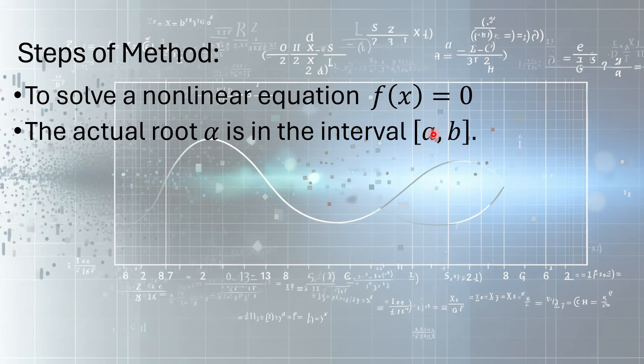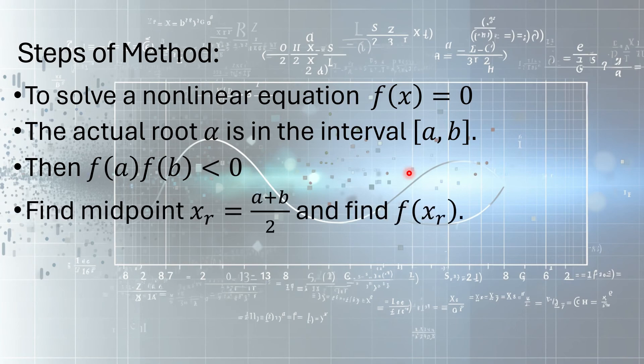The function will have opposite sign on these points. For that purpose, we say f(a)·f(b) must be less than 0. That means f(a) and f(b) both have opposite signs. If that is the case, the equation will be having one root in the interval [a, b].